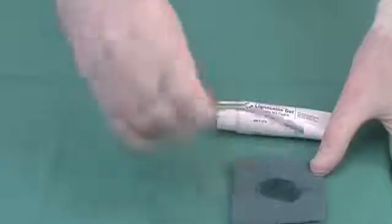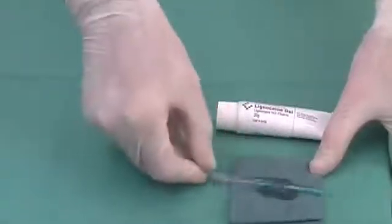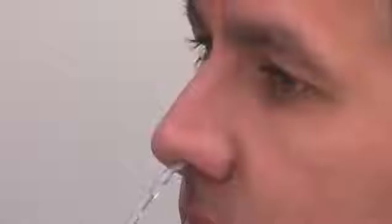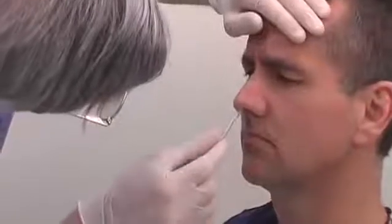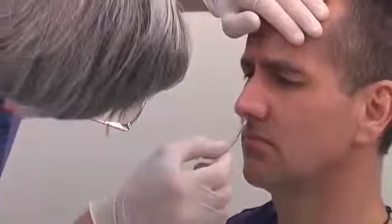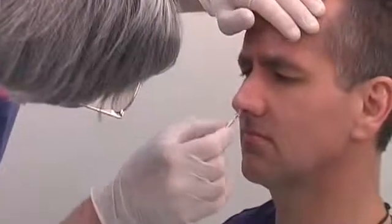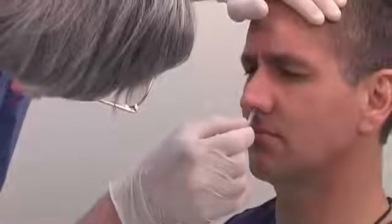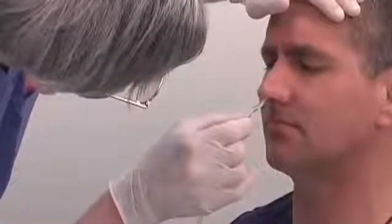Lubricate the proximal end of the tube with lubricating jelly. Insert the tube gently into the chosen nasal passage. Even though there may have been no obvious abnormality noticed during inspection, a non-visible obstruction may prevent the tube from progressing further. In this case, remove the tube and try the opposite nostril.